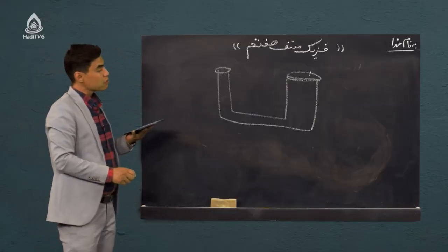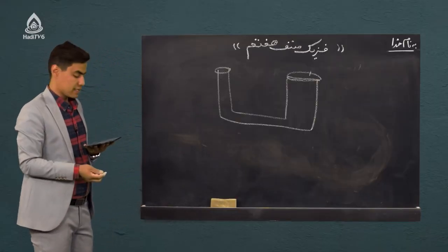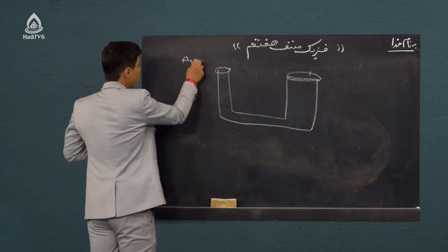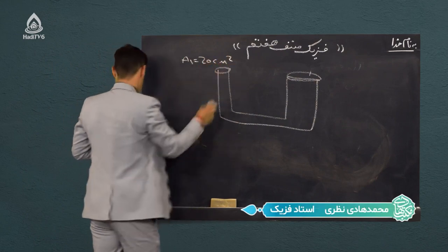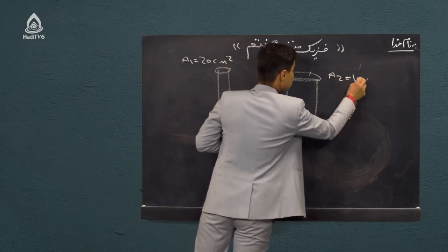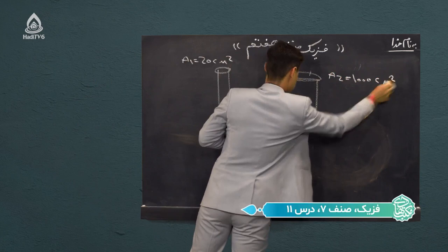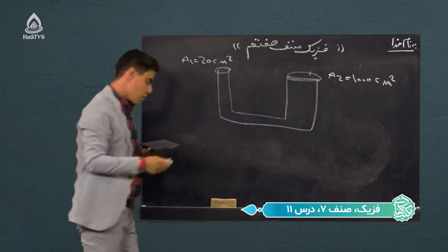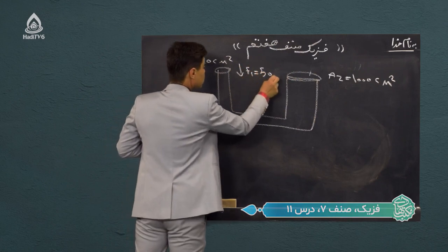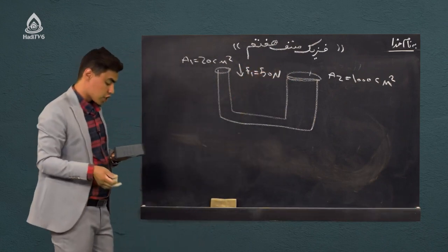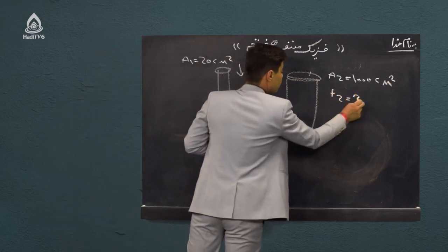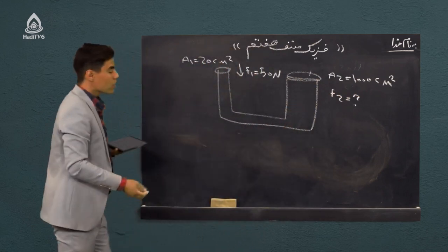یک شکل دیگر از بالابر هیدرولیکی ترسیم میکنیم. مساحت پیستون کوچک A1 بیست سانتیمتر مربع، مساحت پیستون بزرگ A2 یک هزار سانتیمتر مربع، و قوه وارد بر پیستون کوچک F1 پنجاه نیوتن داده شده. مجهول چیست؟ گفته پیستون بزرگ چه قوه‌ای را میتواند جابجا کند؟ پس F2 برای ما مجهول است.